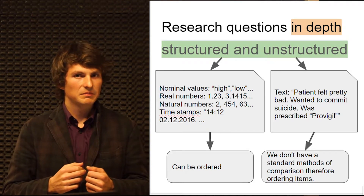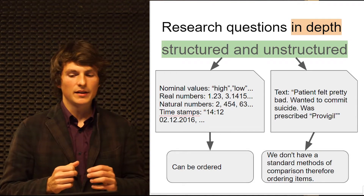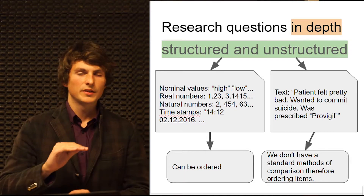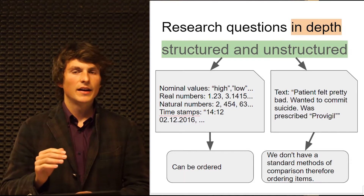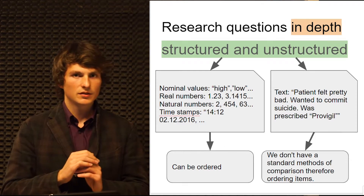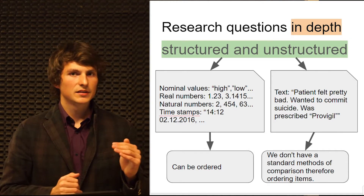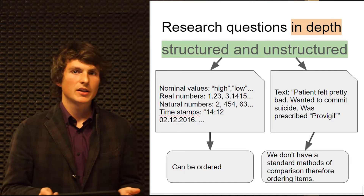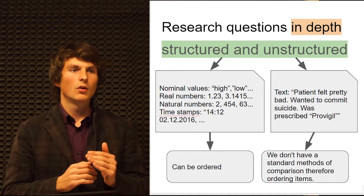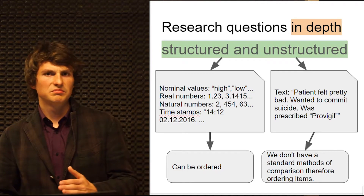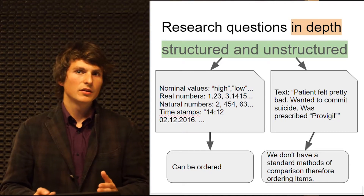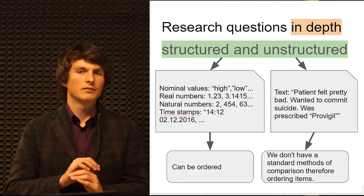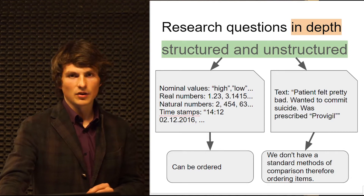Unstructured, on the other hand, is text, for example. In our case, we will use only text. And the problem with it is that we cannot order it — like, we have five texts or five paragraphs, we cannot say this is bigger, this is smaller, this is even smaller. We can only understand the content, and it's very hard for any program yet.